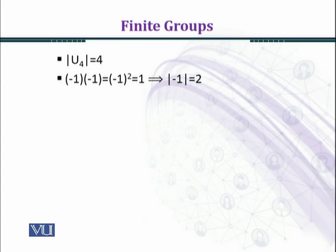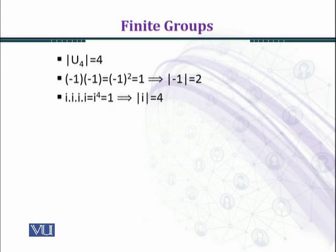Now we find the order of each element. First, the order of -1: the least number of times we multiply -1 with itself to get the identity. (-1)² = 1, the identity element. So the order of -1 equals 2. Now for iota: iota×iota = iota² = -1.